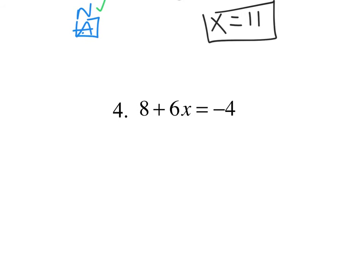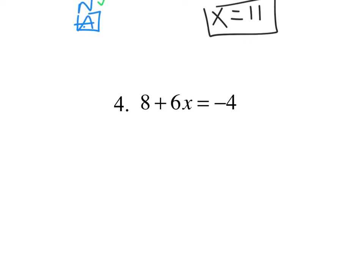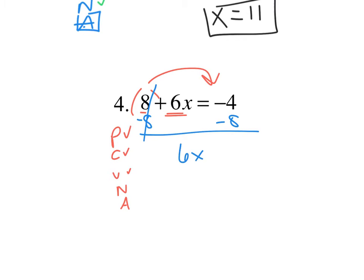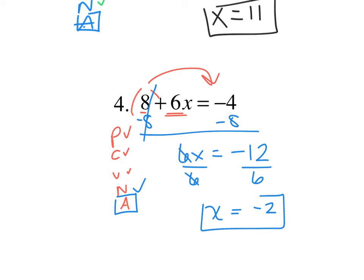Now try to do this one as well by yourself. PCVNA. Do I have parentheses? Nope. Can I combine my 8 and my 6x? Nope. Are all my x's on the left-hand side? Yep. Did I move my numbers to the right-hand side? Nope. So I subtract 8 from both sides. My 8s are going to cancel. I get 6x equals negative 4 plus a negative 8, or negative 4 minus 8. Negative 4 plus a negative 8 is negative 12. I get rid of this 6 by dividing, so I get x equals negative 2. That's your final answer.